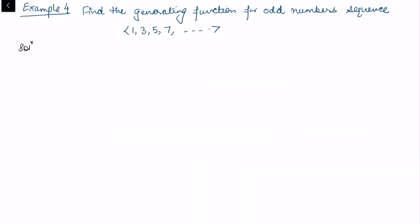Again I want to recall what we've already done. Recall: for the sequence of 1s, the generating function is 1/(1 - x). For the set of natural numbers, the generating function is 1/(1 - x)².